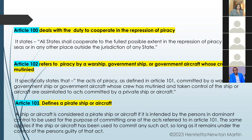Article 100 deals with the duty to cooperate in the repression of piracy. Article 100 of UNCLOS 1982 deals specifically with the duty to cooperate in the repression of piracy. It states that all states should cooperate to the fullest possible extent in the repression of piracy on the high seas or in any other place outside the jurisdiction of any state.